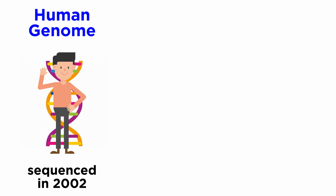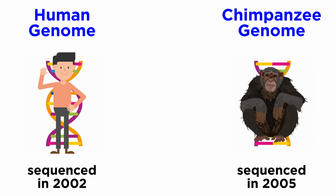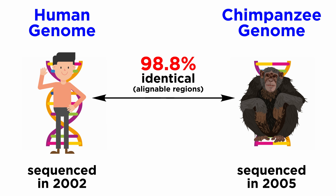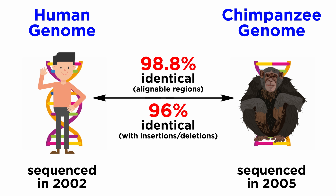The human genome was sequenced in 2002 and the chimpanzee genome was sequenced in 2005, which meant they could finally be compared. Previously, only individual genes had been compared between humans and other organisms, which was still quite useful, but a comparison of the full genome of a human with another animal had yet to be done. In 2005, we learned that the human genome is 98.8% identical to that of the chimpanzee when comparing alignable regions only, and 96% identical when comparing genomes with insertions and deletions included.